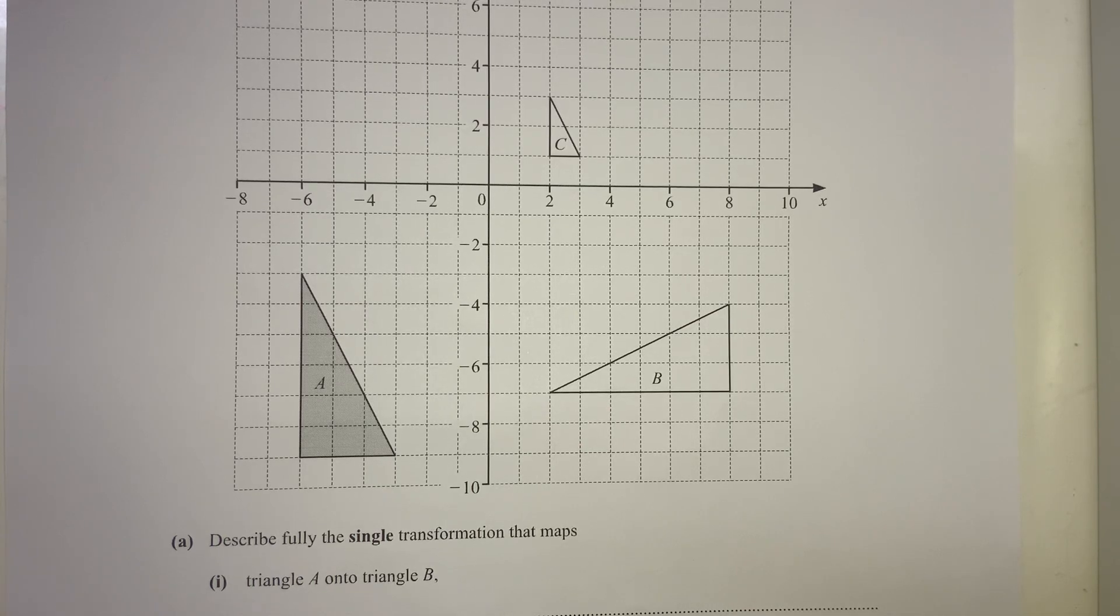Bismillah, in this video I'm going to explain how to find the center of rotation using tracing paper. We have triangle A and triangle B. We need to find the transformation which maps A to B. You can deduce that from A to B this is a rotation 90 degrees clockwise because it rotates like that.